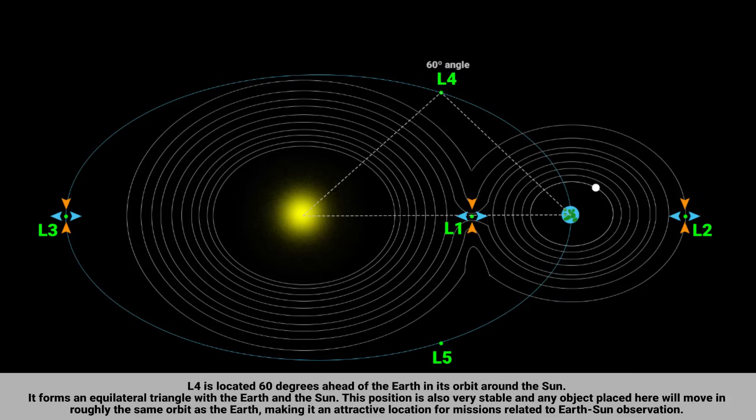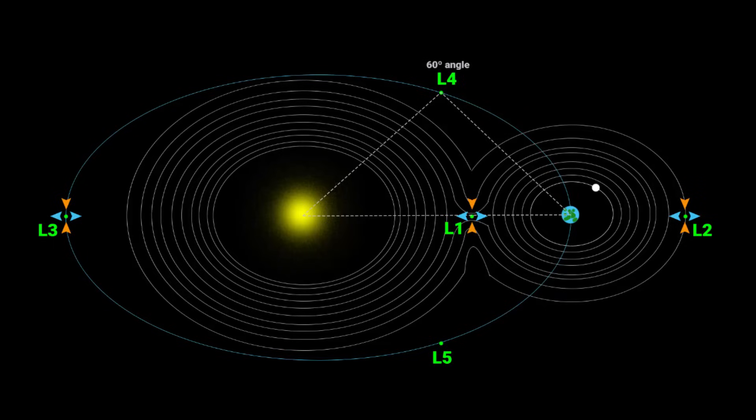L4 is located 60 degrees ahead of the Earth in its orbit around the Sun. It forms an equilateral triangle with the Earth and the Sun. This position is also very stable and any object placed here will move in roughly the same orbit as the Earth, making it an attractive location for missions related to Earth-Sun observation. L5 is also situated 60 degrees behind the Earth in its orbit around the Sun. This position also forms an equilateral triangle with the Earth and the Sun. It is also an attractive location for conducting solar missions, just like L4.